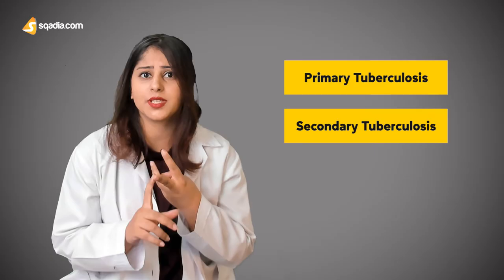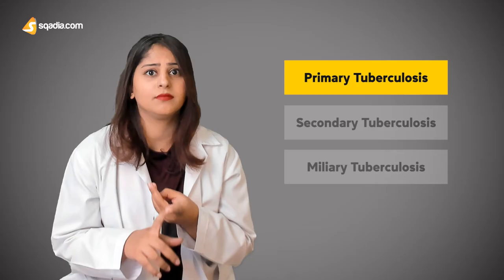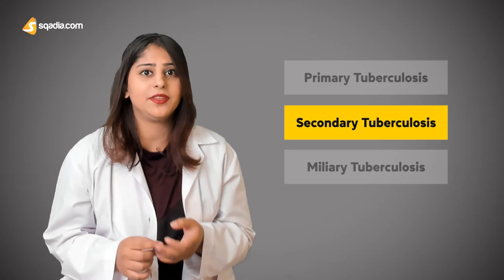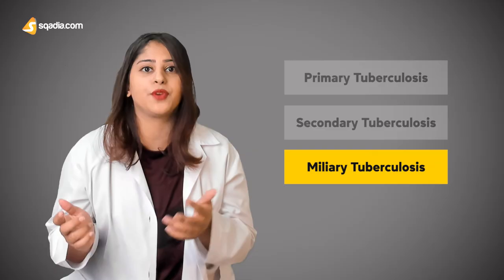Primary tuberculosis can occur in the chest, in the abdomen, or in the kidneys. Secondary tuberculosis occurs when there is primary tuberculosis that has been latent for years. Miliary tuberculosis is due to the hematogenous spread of the tuberculomas.